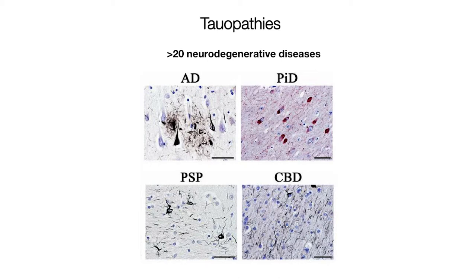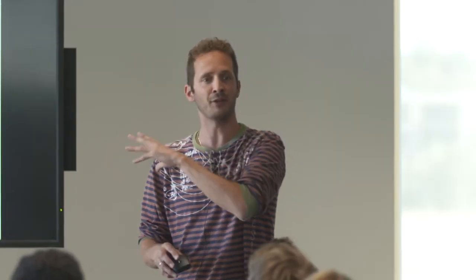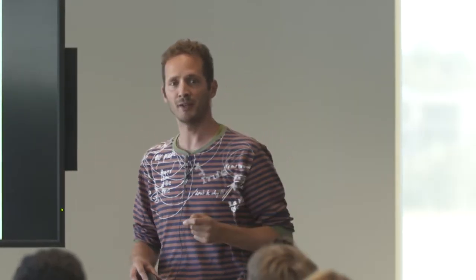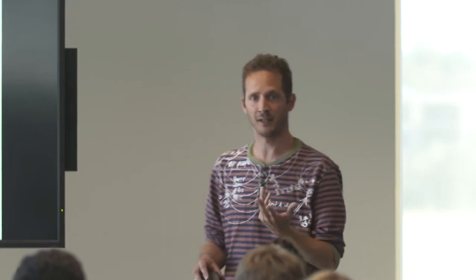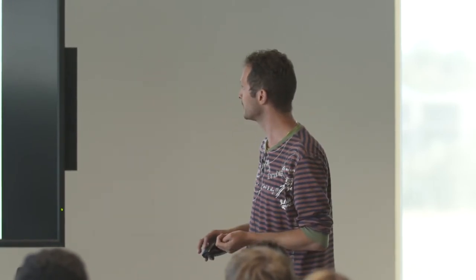If you look at brains post-mortem from people who've died of these diseases, they are at a histological, cellular level very different. It's the same protein going wrong, but the effects on the brain are very different. Also, different areas of the brain are affected in the different diseases, leading to different symptoms.